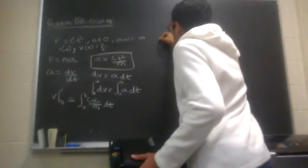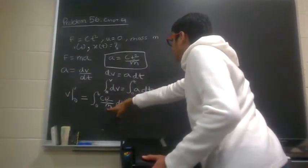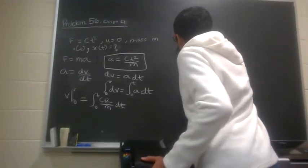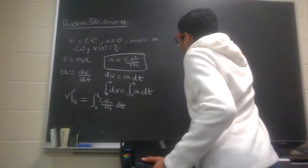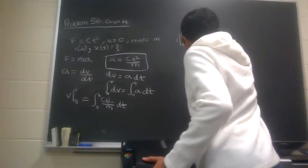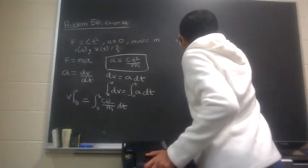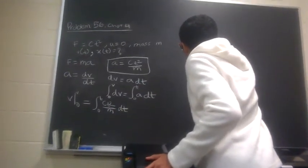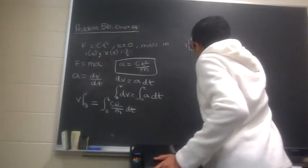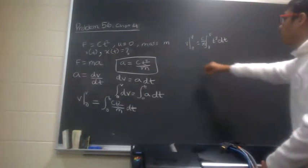Now, what we can do is we evaluate this integral over here, and v is equal to integral 0 to t. We can take c over m outside of the integral, that's a constant, and then t squared dt.